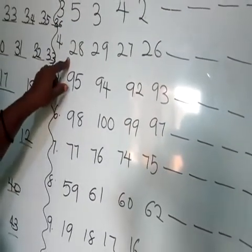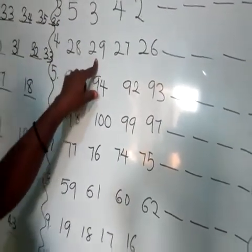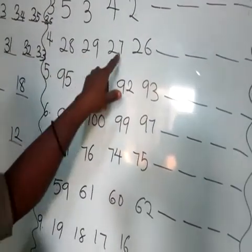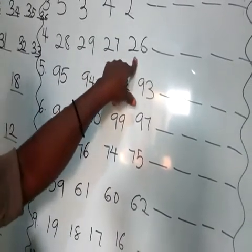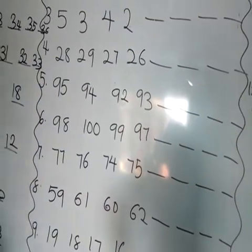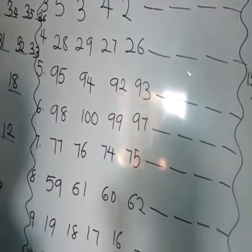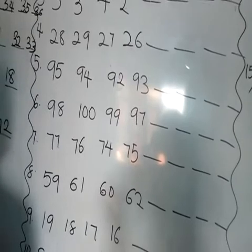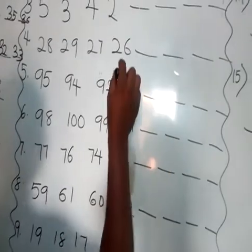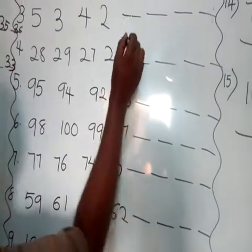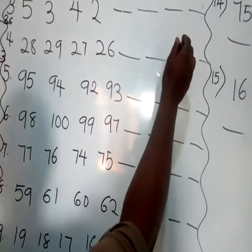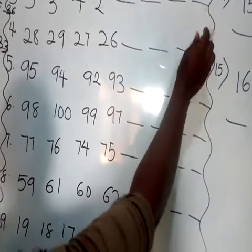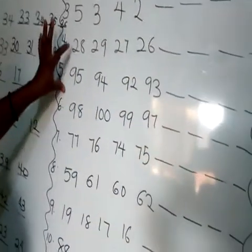Number 4: we have 28, 29, 27, and 26. Which number comes first? We have 26 as our first number. Let's count: 26, 27, 28, and 29.